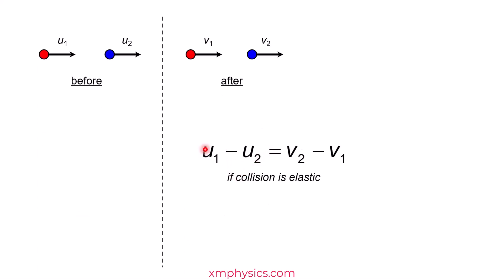So what is this formula saying? The left-hand side, U₁ minus U₂, is the so-called relative speed of approach. And the right-hand side, V₂ minus V₁, is the so-called relative speed of separation. So if the collision is elastic, the two masses will approach each other and separate from each other at the same relative speed.